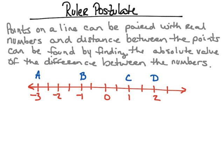First, it says that points on a line can be paired with a real number. On this number line I have points A, B, C, and D. Point A is paired with negative 3, point B is paired with negative 1, point C is paired with 1, and point D is paired with 2. Each point is paired with a real number — negative 3, negative 1, 1, and 2 are the specific real numbers in this case.